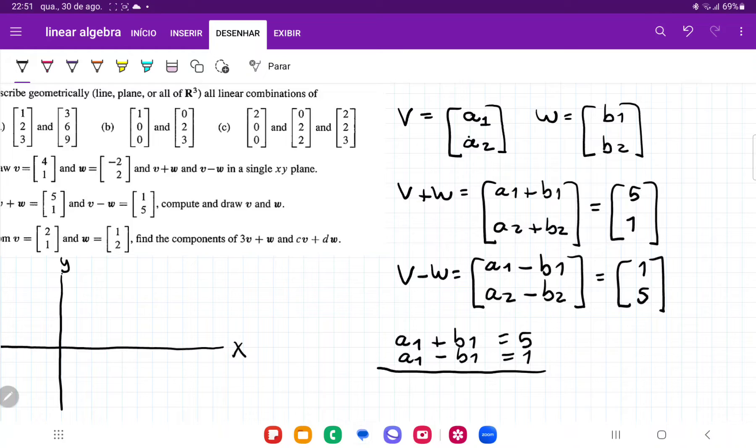So what we're going to do here is we're going to add these two equations. So we have that 2a1 plus minus b1 cancels out is equal to 6. And so we have here that therefore a1 is equal to 3.